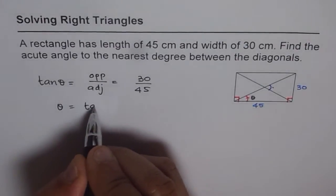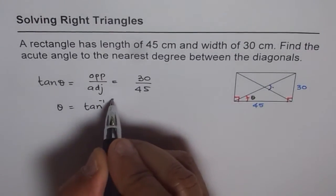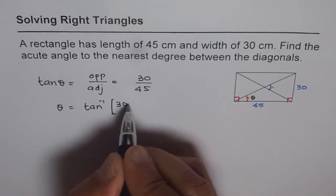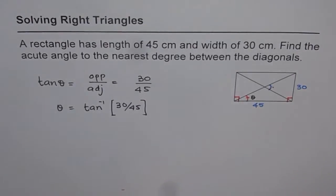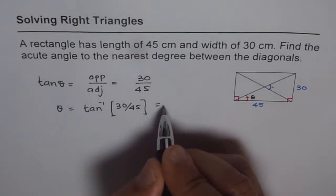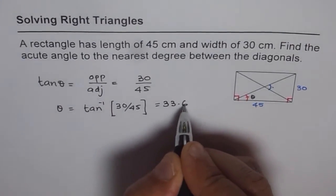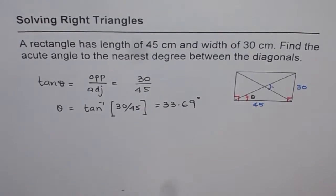We can say theta is tan inverse of this angle, which is 30 divided by 45 bracket close. You have to use brackets very carefully. So we have second function tan inverse within brackets 30 divided by 45 bracket close equals to 33.69. So we get theta equals to 33.69 degrees. That is our answer.